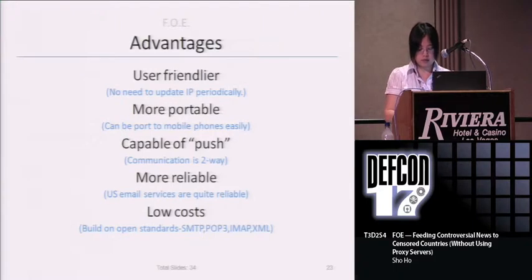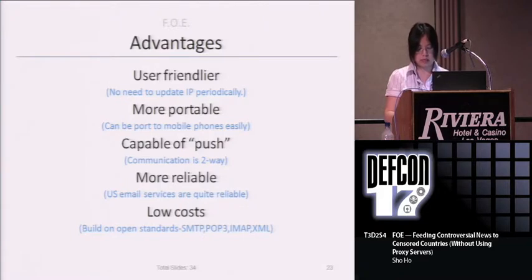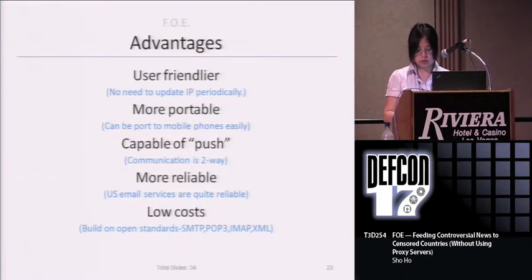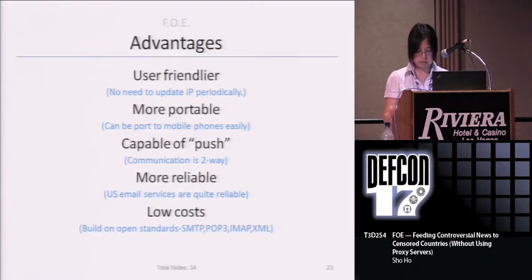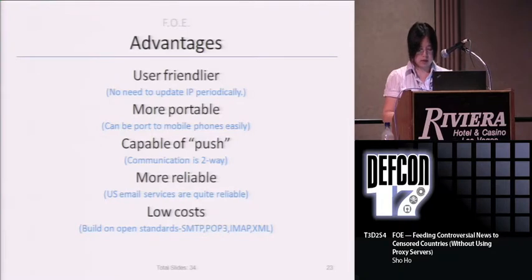What are some advantages of using FOE? First, FOE has a friendly user interface which does everything automatically and keeps users updated. News feeds and updates will arrive automatically when they become available — users don't need to press the reload button regularly to get the latest news. Unlike web-based proxies, the FOE server cannot be blocked, so users don't need to find new proxies. Second, since FOE is based on email, it is very easy to port the program to other platforms, including mobile phones, Linux, FreeBSD, and OS X.